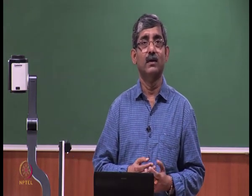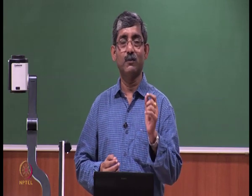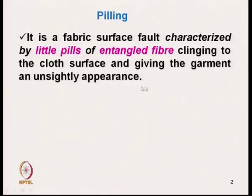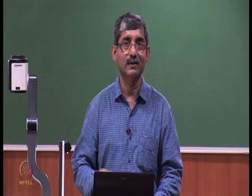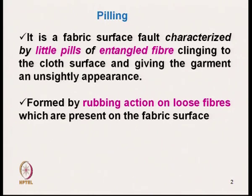What is pilling? It is a fabric surface fault characterized by little pills of entangled fibres clinging to the cloth surface, giving the garment an unsightly appearance. We must emphasize the term: it involves little pills and entangled fibres. Pilling starts with fibre entanglement and is formed by rubbing action on loose fibres present on the fabric surface.